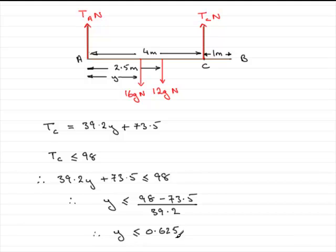So that gives us our range of values of y. We know that y must be positive so you could actually add to this that therefore y must be greater than or equal to 0 but less than or equal to 0.625.